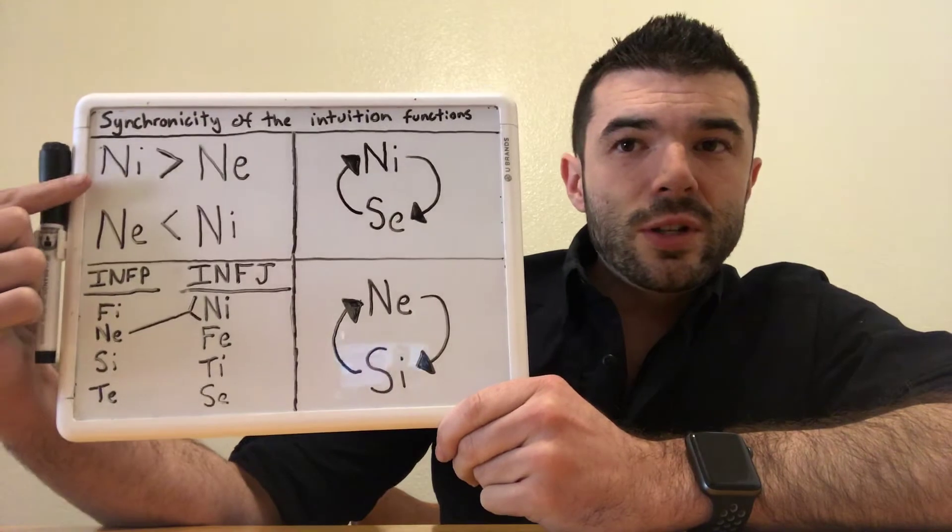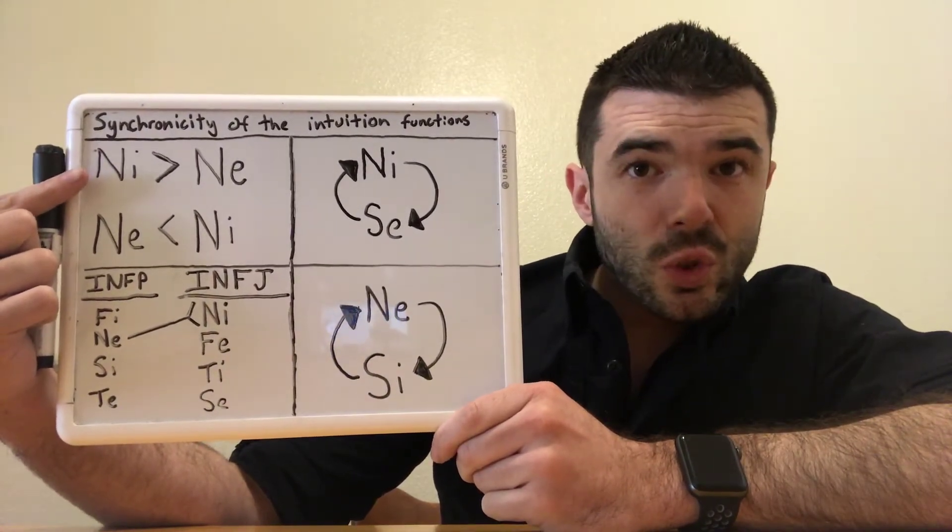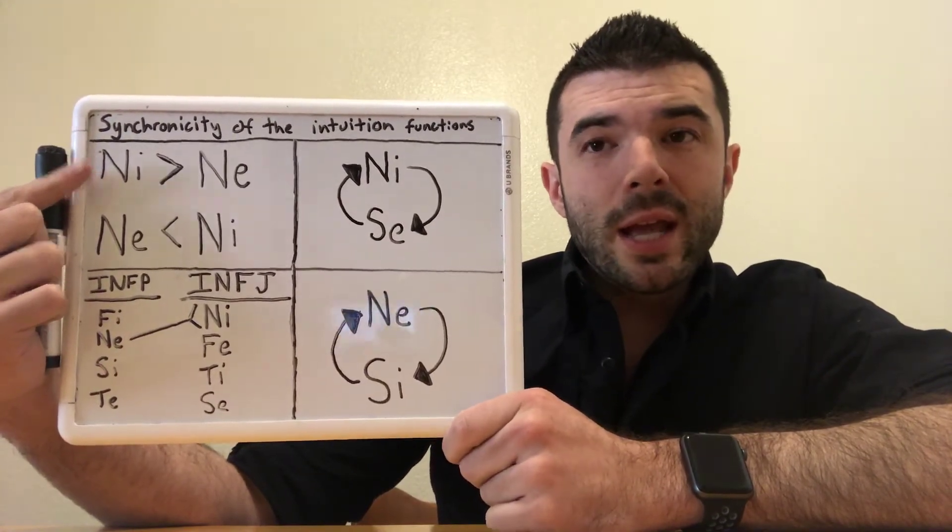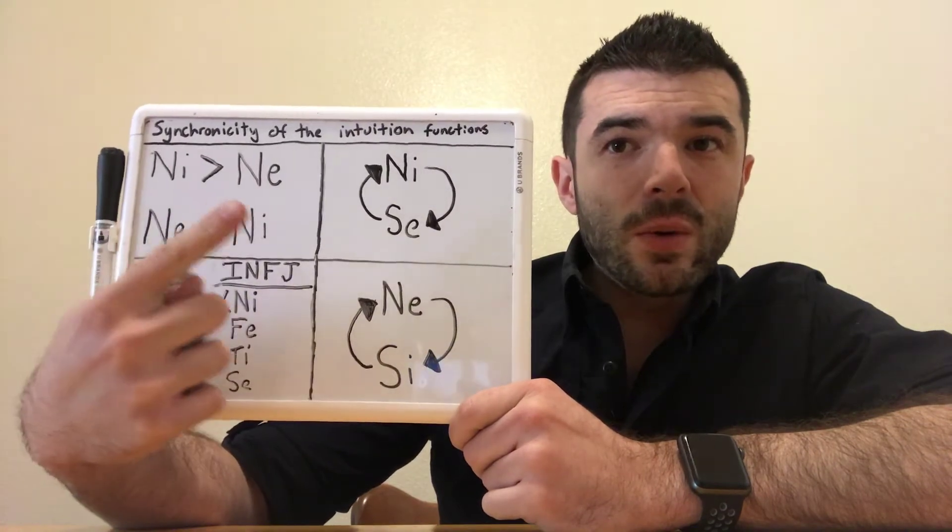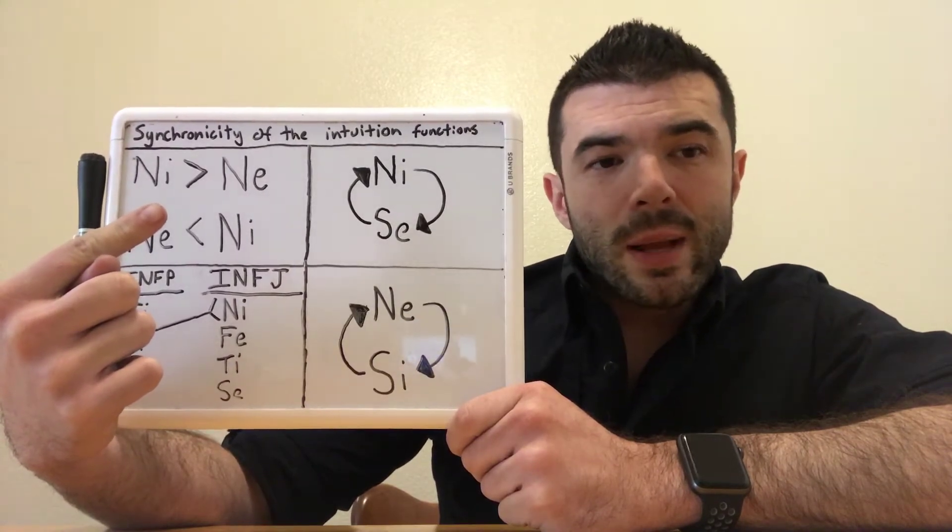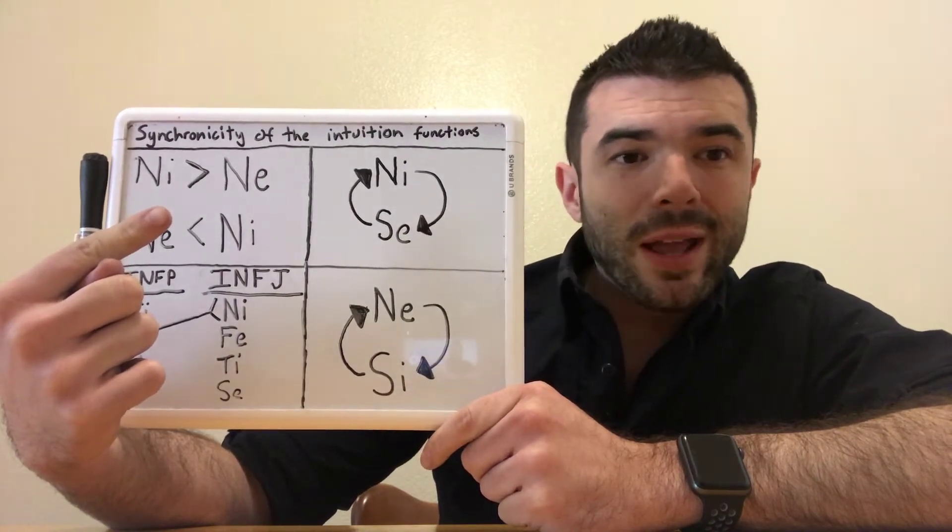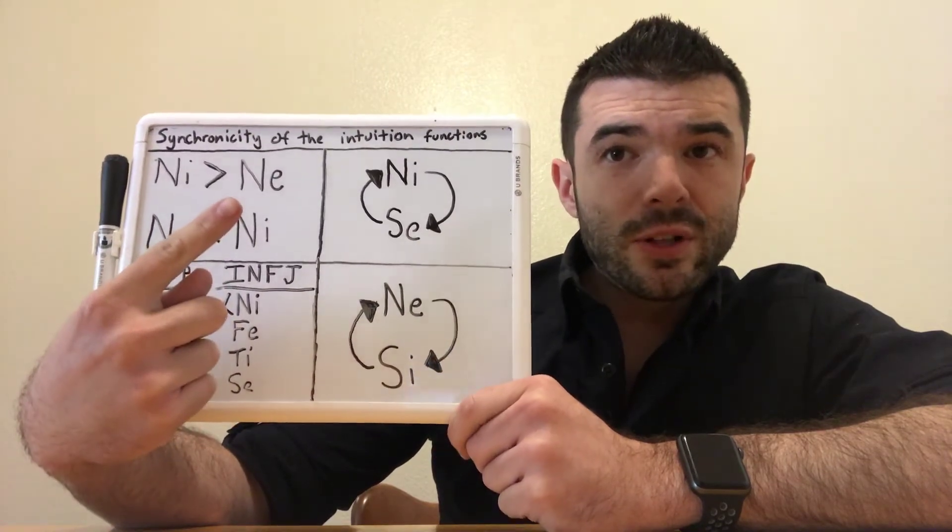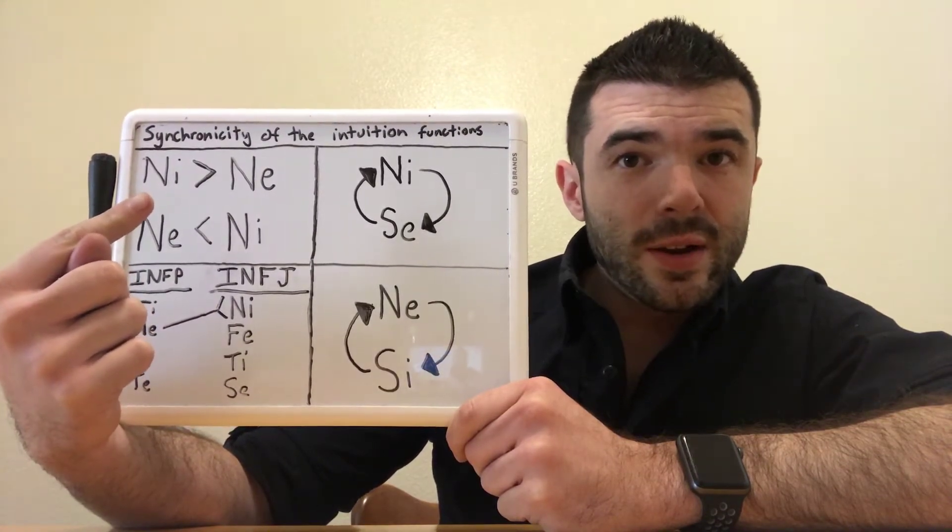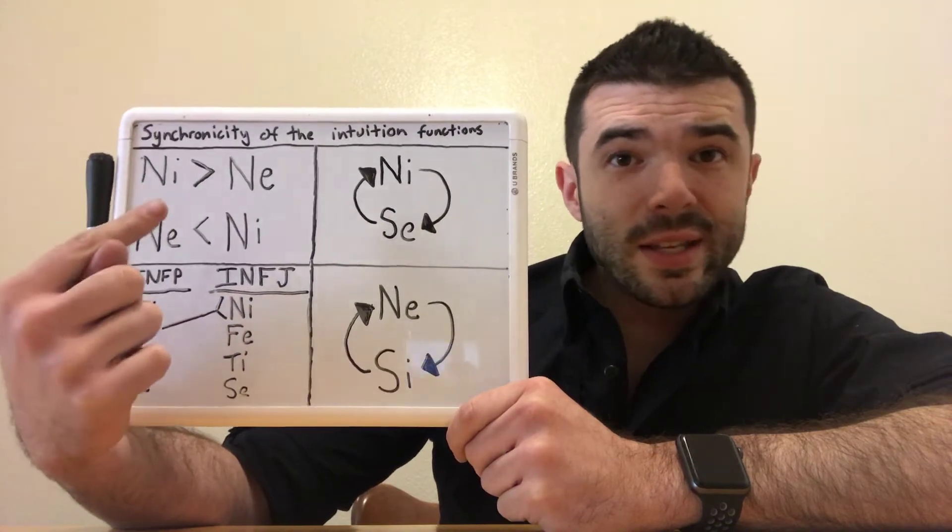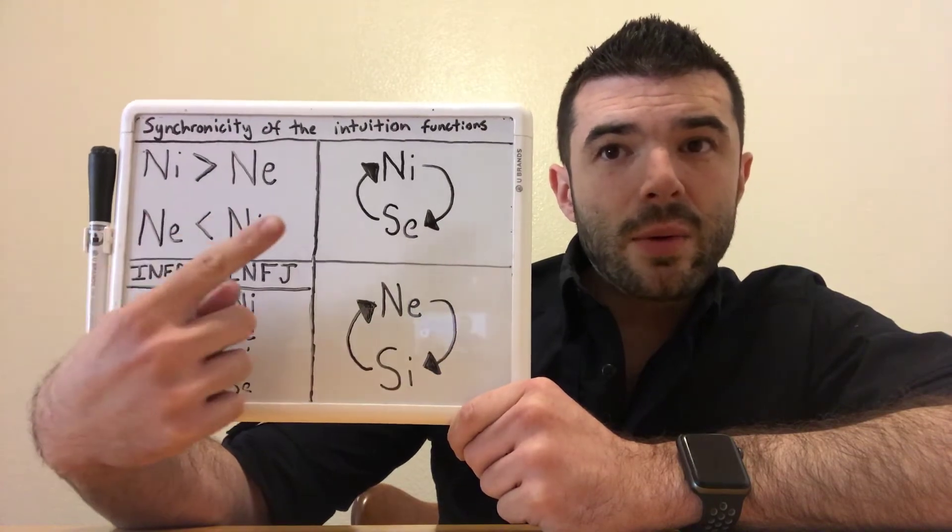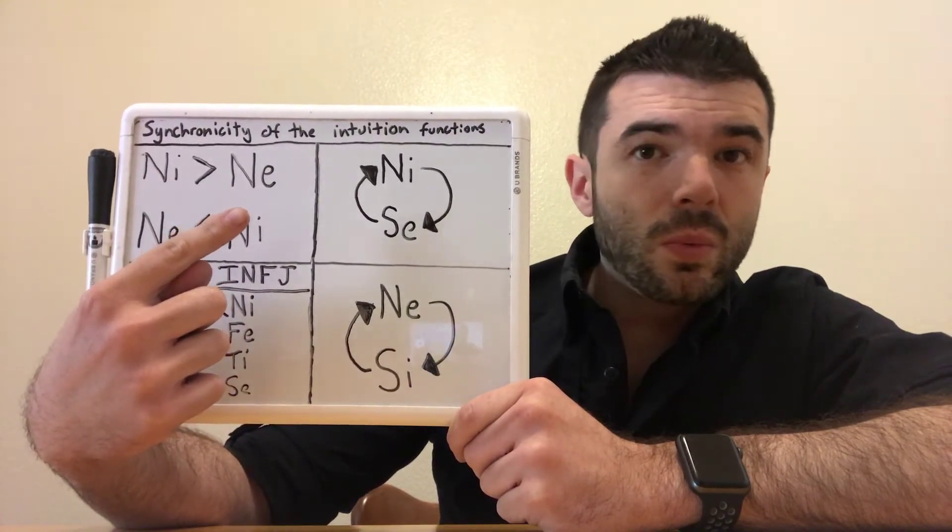So now remember, introverted intuition, because it's an introverted function, it is the source. It is a source of intuition, is a source of desire, it is a source of willpower. And extroverted intuition users get off on that. They want to eat the introverted intuition users. So if you're in a relationship with somebody, it could be romantic, business, parenting, intimate, a friend, whatever. Typically extroverted intuition users, people who have extroverted intuition in their ego, like to hang out with introverted intuition users in their ego. Because the extroverted intuition is constantly asking the introverted intuition user, 'Hey, what do you want? Hey, what are you gonna do? Hey, what are we doing? Or what are we going to do? Actually, what do we want to do?'